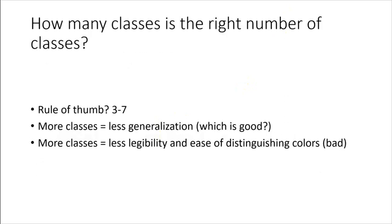Okay, how many classes is the right number of classes? Rule of thumb, after much study, anywhere from three to seven. It's up to you. Anything more than seven, it overcomplicates, and anything less than three, you're just losing too much information. More classes equals less generalization, which is a good thing, but more classes means it's harder to tell them apart, and that's not a good thing.